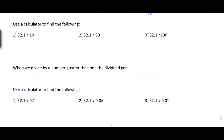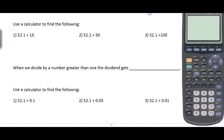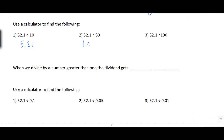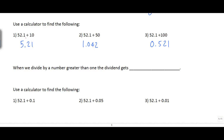Let's do a quick comparison using a calculator. 52.1 divided by 10 gives 5.21. 52.1 divided by 50 gives 1.042. And 52.1 divided by 100 gives 0.521. As we divide by a bigger and bigger number, our answers get smaller and smaller. This is how we're used to dividing. When we divide by a number greater than 1, the quotient gets smaller — 'dividend' is just another word for the answer when you divide.